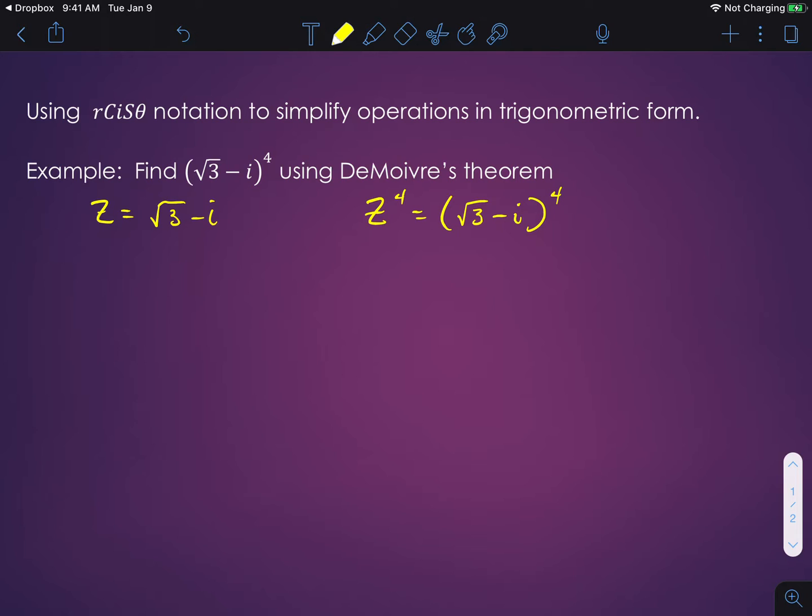We need to start off by finding the magnitude of z. If you remember, we're going to take the magnitude of z, and that's just going to be the square root of (√3)² plus (-1)². That's equal to √(3 + 1), and we take the square root of that and we get that the magnitude of z is equal to 2.